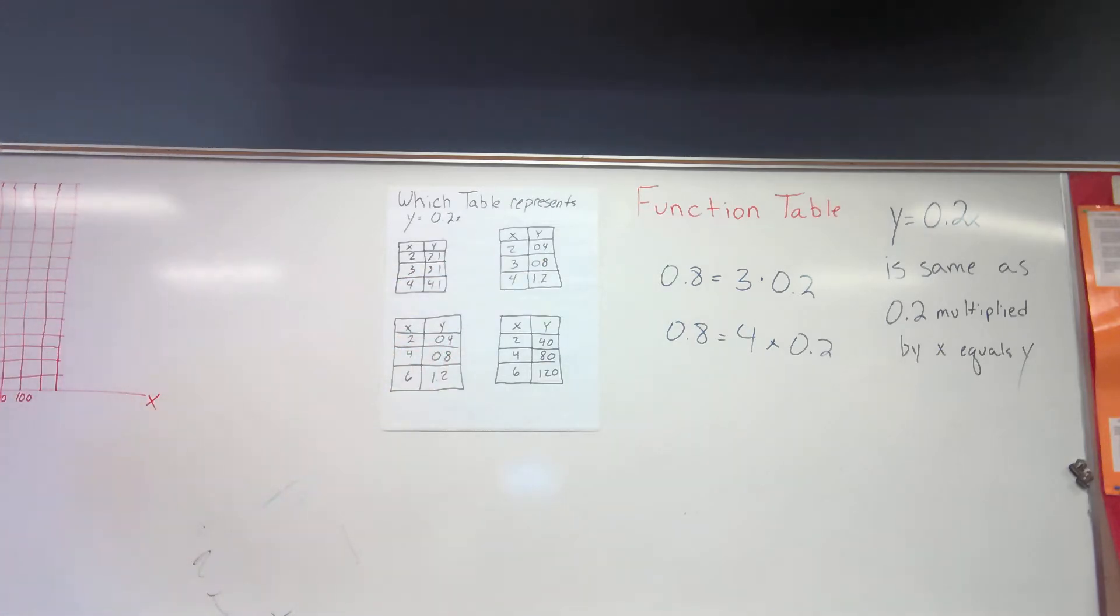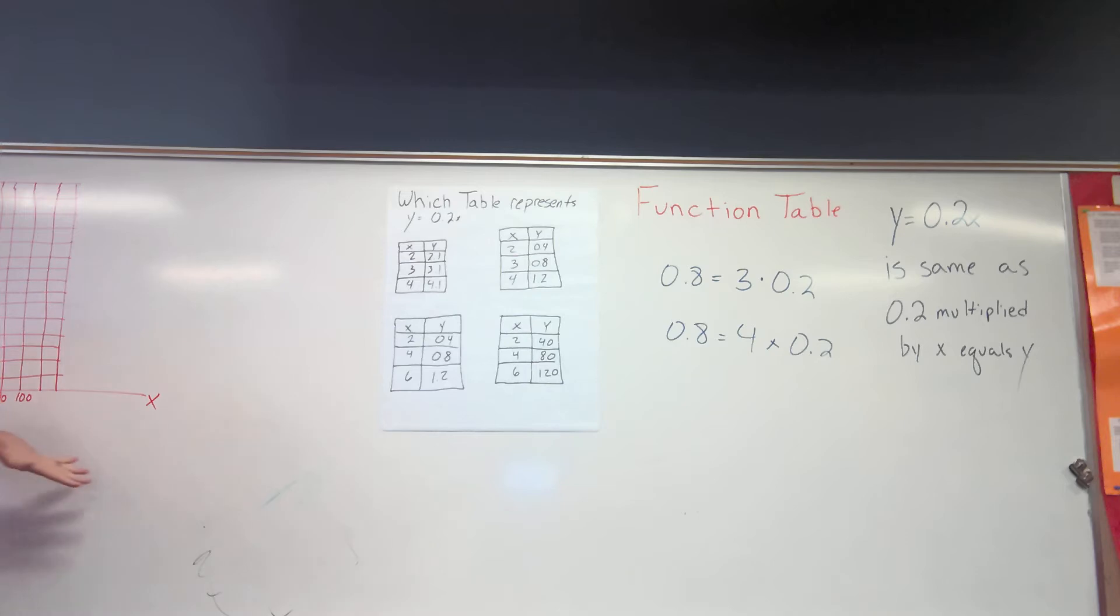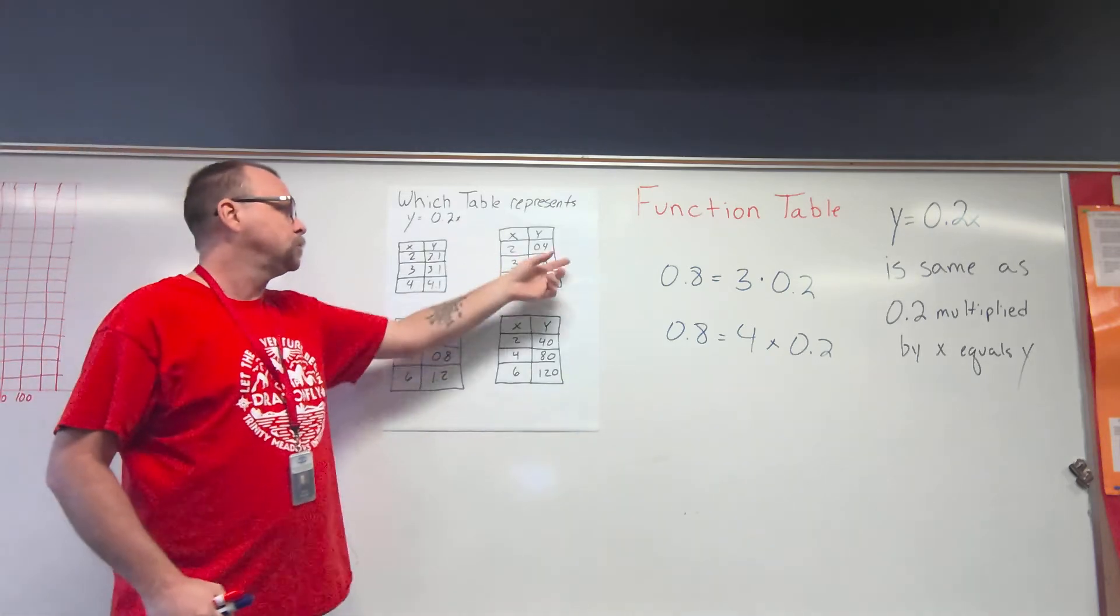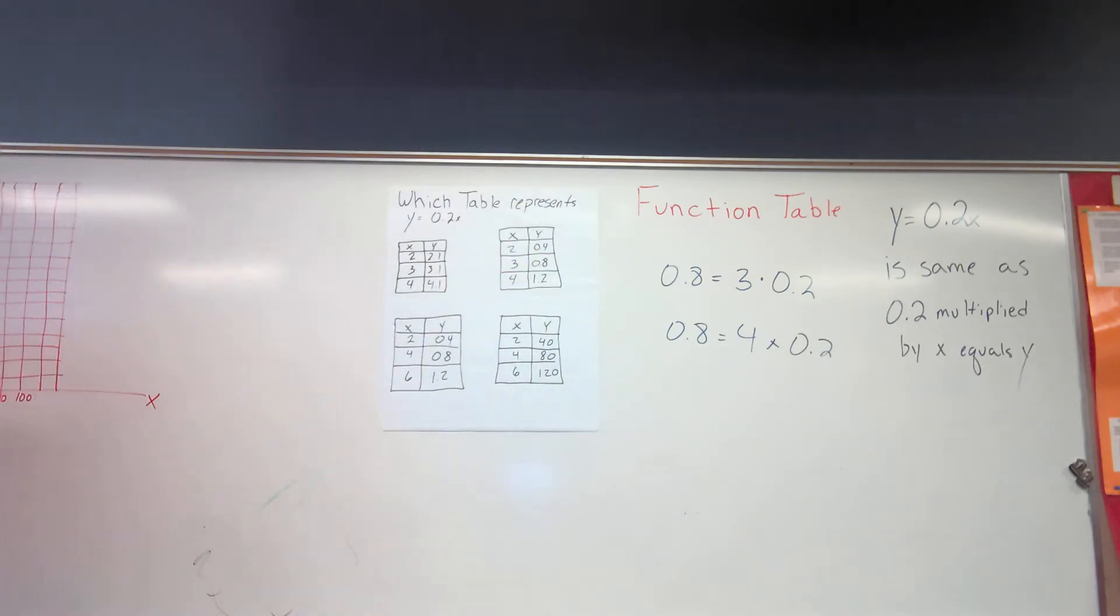But if we look, all three parts of the table have to be correct. But once I know which one equals eight tenths, that's going to tell me that that table is correct.